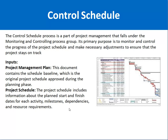The first input for the Control Schedule process is the Project Management Plan, which is a collection of different documents such as the scope management plan and communication management plan. One key component is the schedule baseline — the approved schedule from the planning phase. For example, management approved the project must be completed within four months, starting January and finishing by end of April. The schedule baseline is used to measure schedule performance.